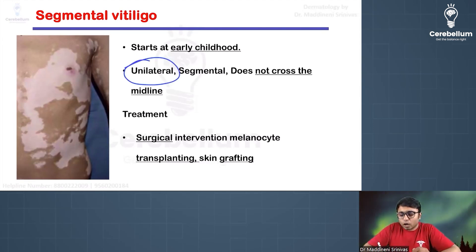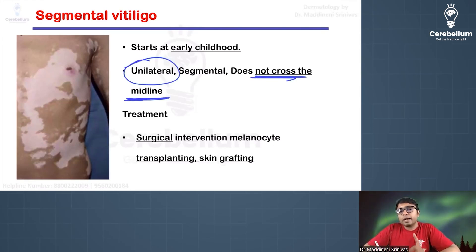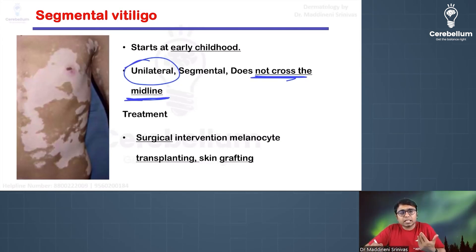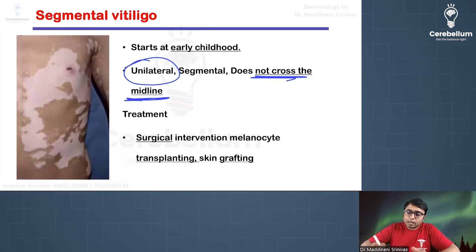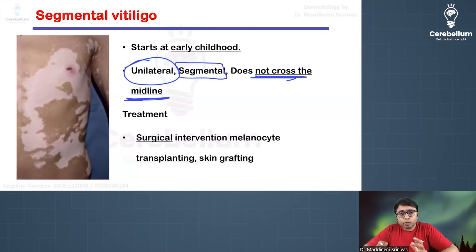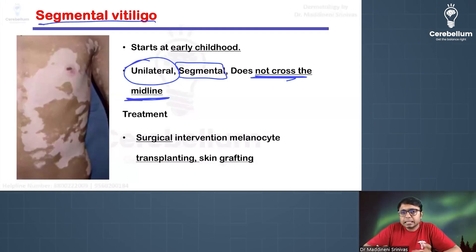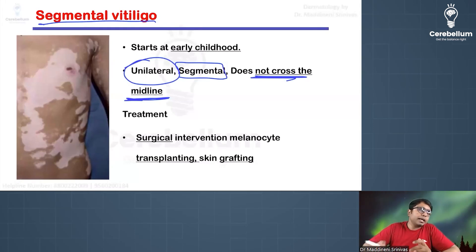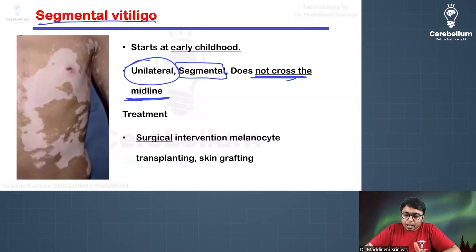Segmental vitiligo refers to lesions that are unilateral, not crossing the midline. Whenever a condition affects only one side of the body, arranged in a segment or dermatome, we use the term 'segmental.' In segmental vitiligo, chalky white macules are seen involving one side of the body, not crossing the midline.